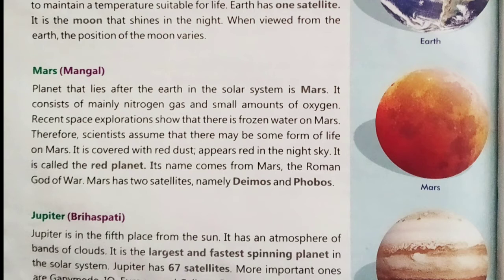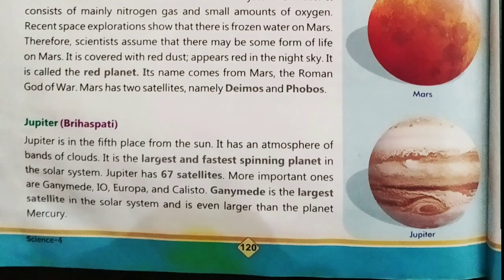Mars has two satellites, namely Deimos and Phobos. Jupiter is in the fifth place from the sun. It has an atmosphere of bands of clouds. It is the largest and fastest spinning planet in the solar system. Jupiter has 67 satellites; the more important ones are Ganymede, I.O., Europa and Callisto. Ganymede is the largest satellite in the solar system and is even larger than the planet Mercury.